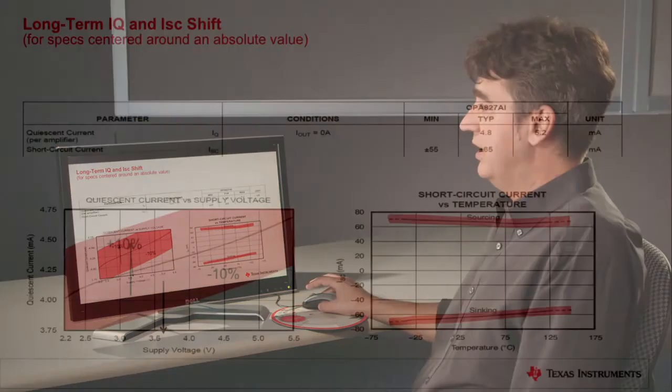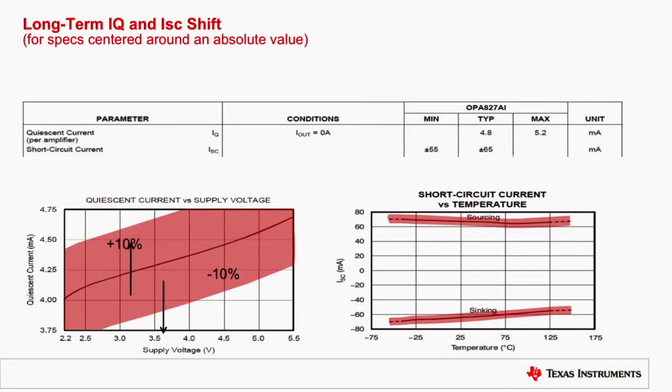For spec centers around some fixed value, like in this case quiescent current or short circuit current, it is clear that those specs cannot double in its value or become zero since the product would stop working. In such cases, the specs can move by ±10%. In this case, this is represented by the red band around the typical value shown in this graph.